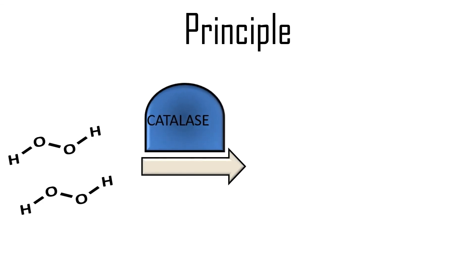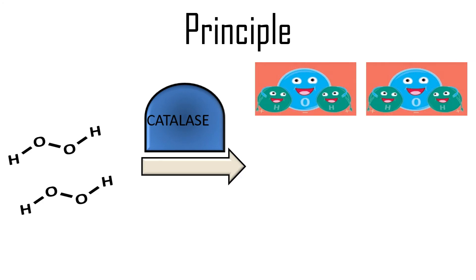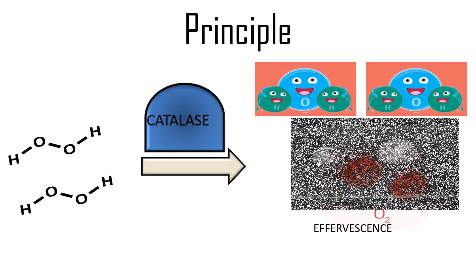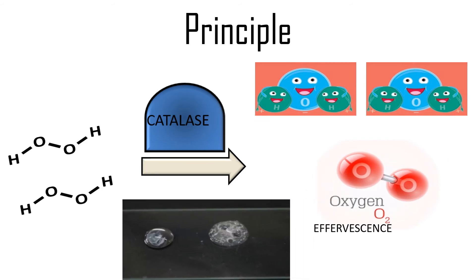When hydrogen peroxide is acted upon by the enzyme catalase, hydrogen peroxide is broken down to give two molecules of water and one molecule of oxygen is evolved, which gives you the effervescence observed in the test.